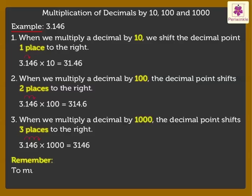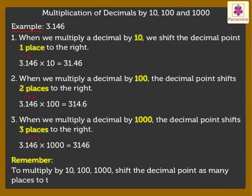Remember, to multiply by ten, one hundred, one thousand, shift the decimal point as many places to the right as there are zeros after one.